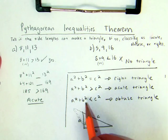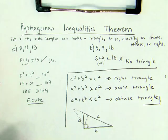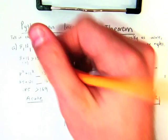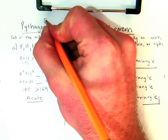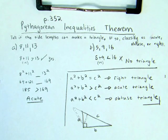So that is our Pythagorean inequalities theorem. For more practice with the Pythagorean inequalities theorem, turn in your Holt geometry textbook to page 352 and work on problems 9 through 14.